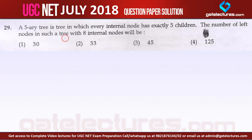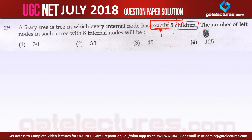Let us look at question number 29, which is from algorithms. A 5-ary tree is a tree in which every internal node has exactly 5 children. The word 'exactly' is very important here. The question asks for the number of leaf nodes in such a tree with 8 internal nodes.